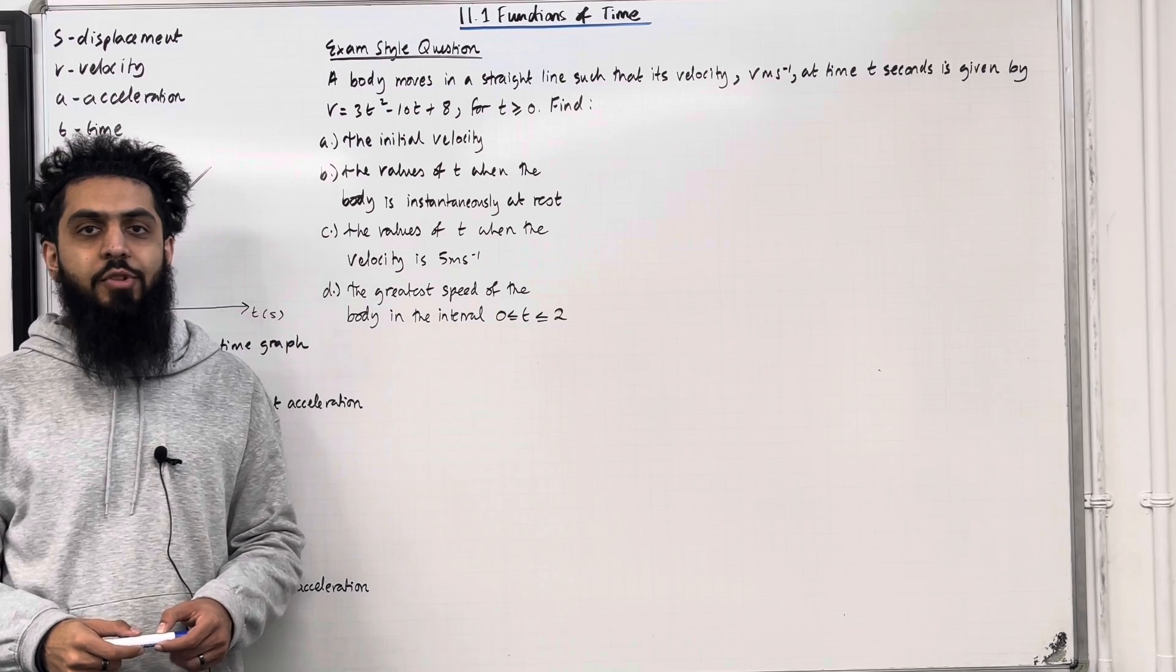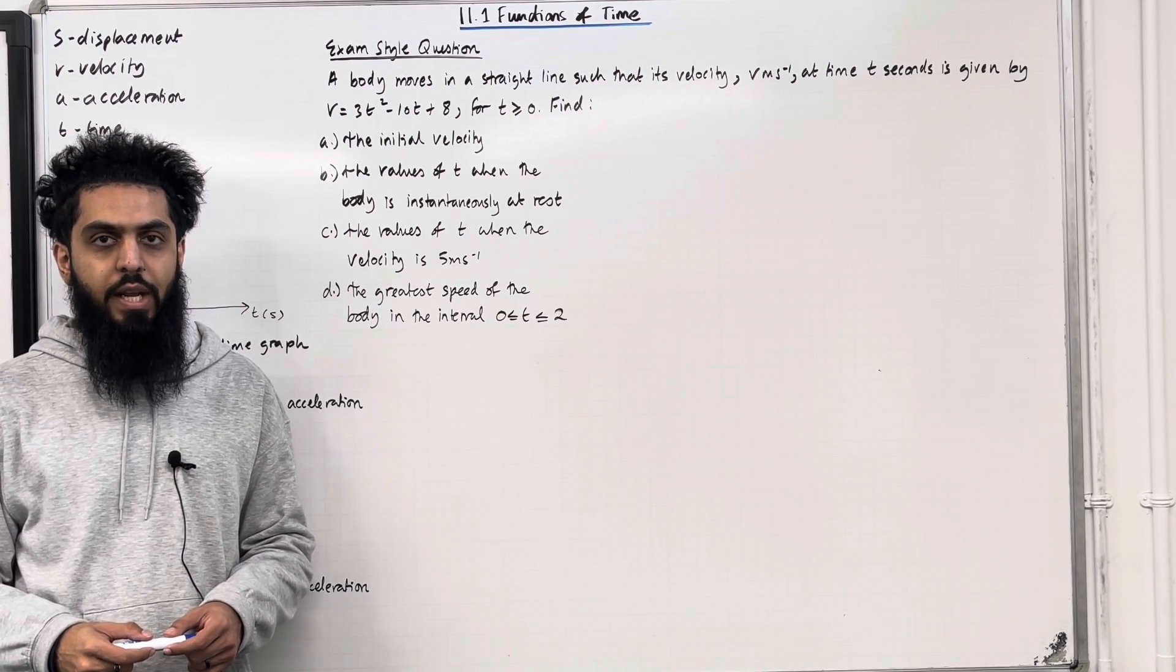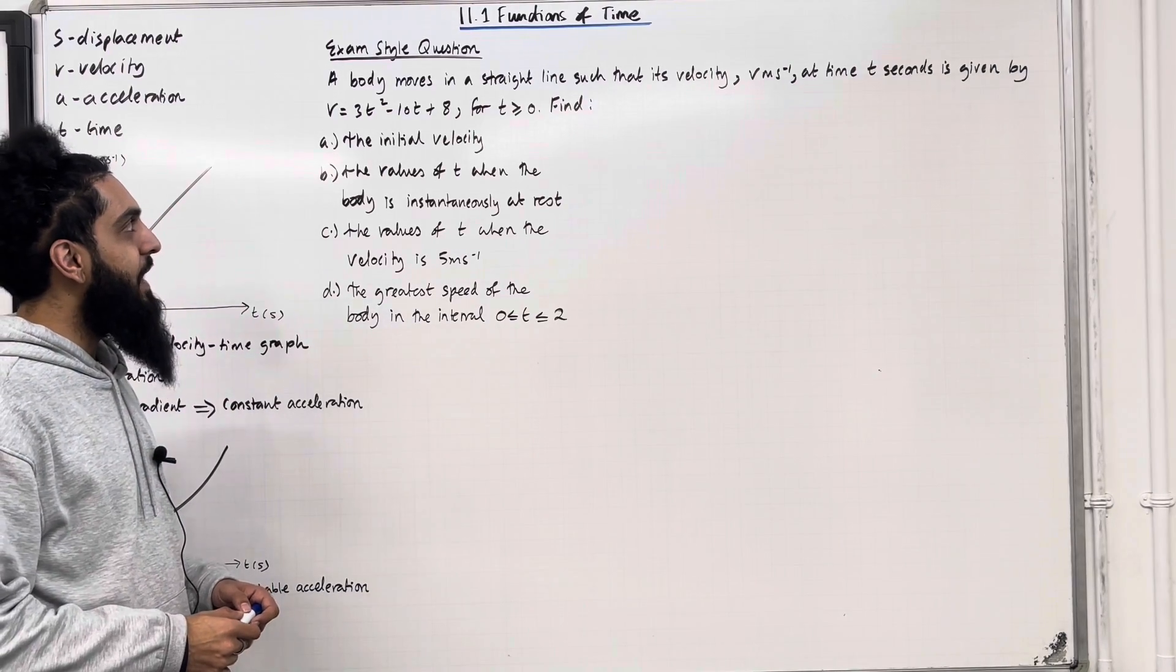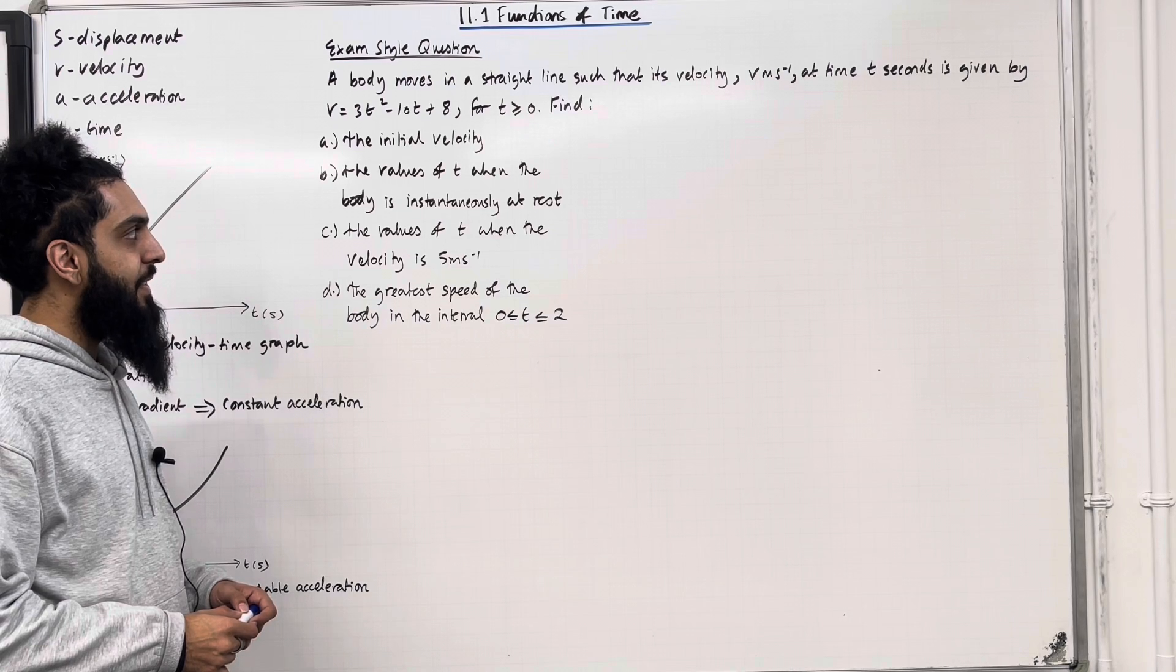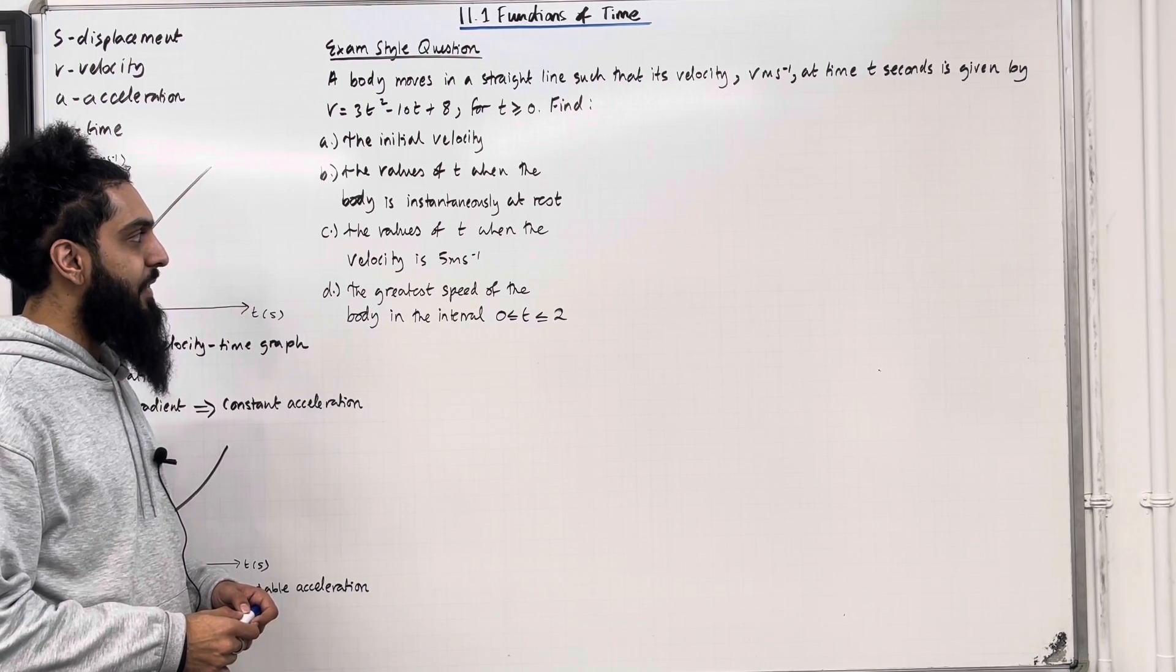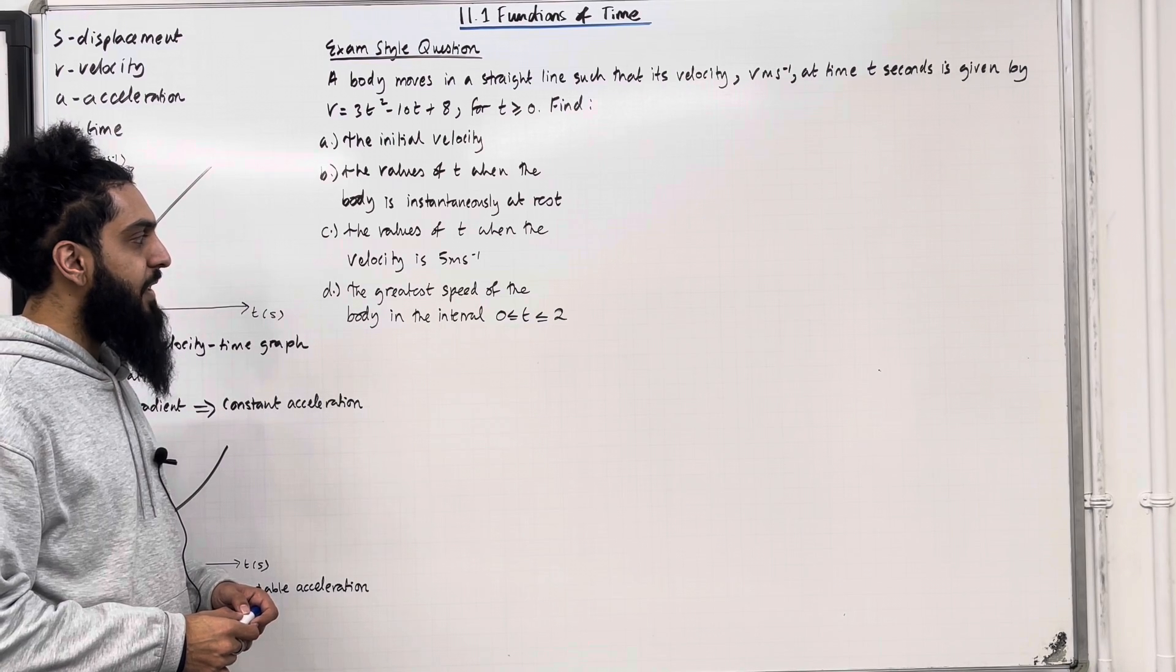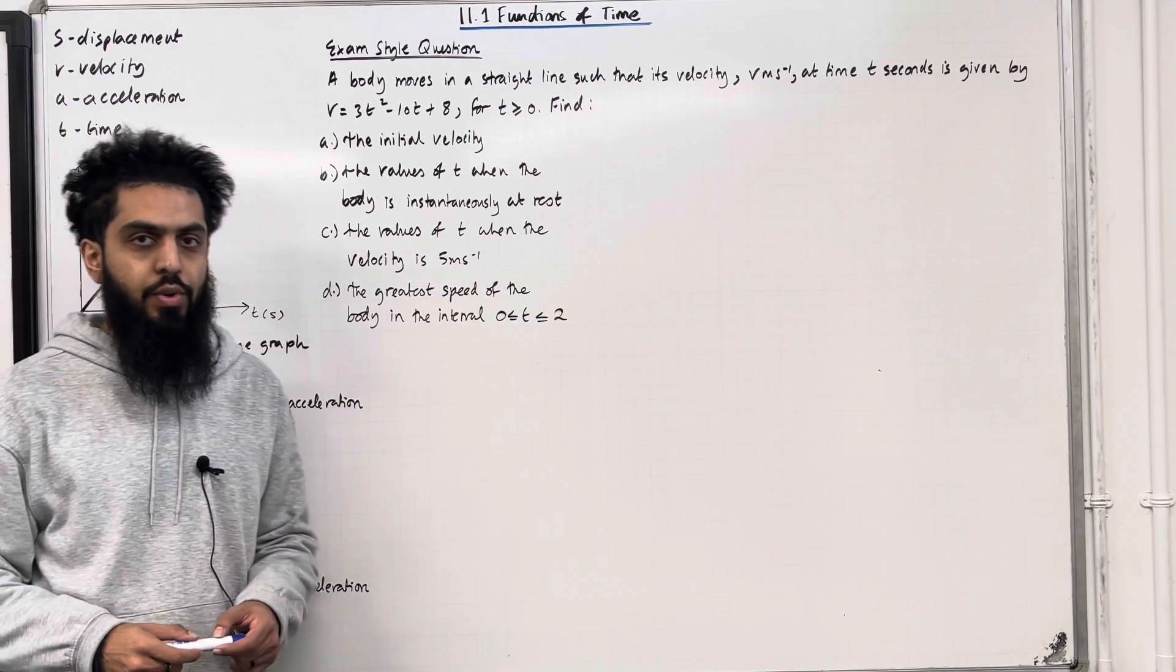t represents time, so t cannot be negative. Hence, the restriction t is greater than or equal to 0. Find part a, the initial velocity. Part b, the values of t when the body is instantaneously at rest. Part c, the values of t when the velocity is 5 meters per second. And part d, the greatest speed of the body in the interval t is greater than or equal to 0 but less than or equal to 2.